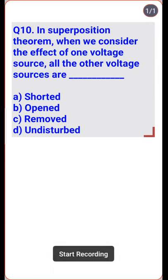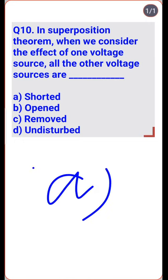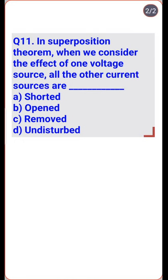In the superposition theorem, when we consider the effect of one voltage source, all other voltage sources are shorted and all current sources are open — option A. Similarly, all other current sources are open — option B is the right one.